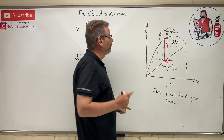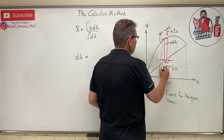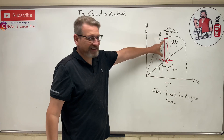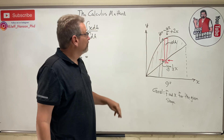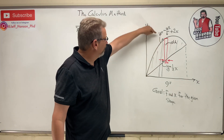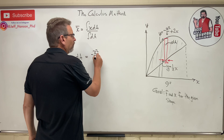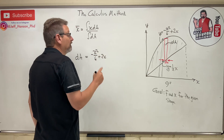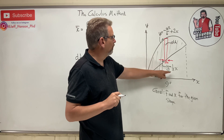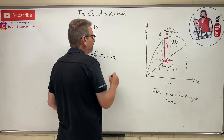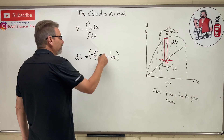The width is dx, so what is the height? I'll draw two arrows — here's one arrow and here's another, so the height is this whole thing minus this, which leaves us the height of the rectangle. The top equation gives all the y values, so dA equals (-x²/6 + 2x) — but from that I subtract the y value on the bottom, which is (1/2)x. That's the height of the rectangle.